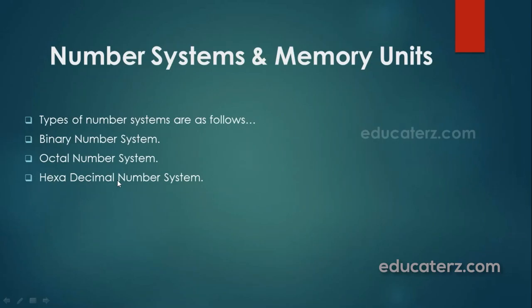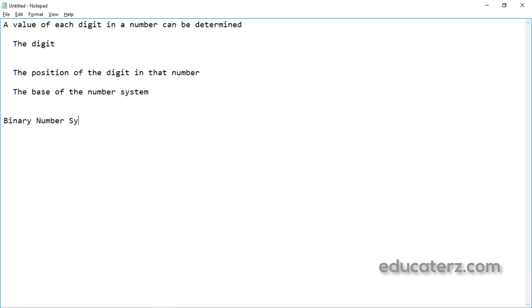So how many number systems do we have? The types of number systems are: binary number system, octal number system, and hexadecimal number system. Remember that these are not specific to the .NET framework — they will be applied for all languages. Number system and memory units are applicable for all programming languages.